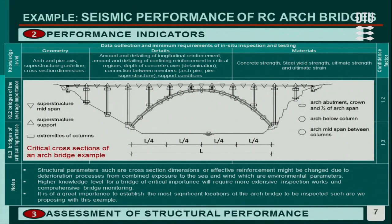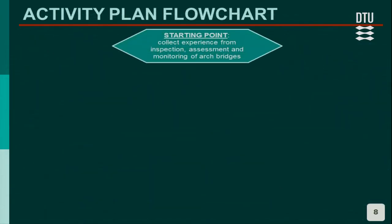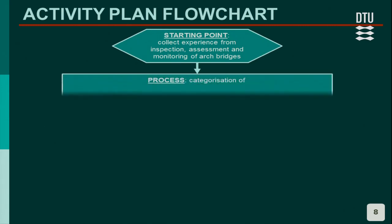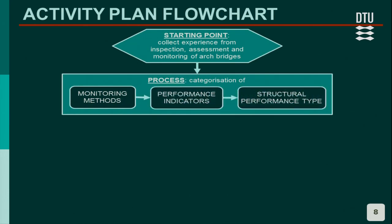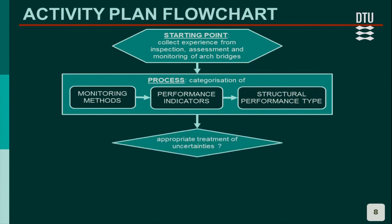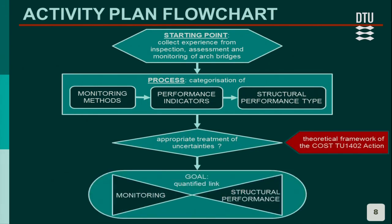This is an example of the most important cross-sections for seismic performance: the abutment, the crown, one-fourth of the arch span, and the extremities of columns are the most important. Instead of conclusions, I will give a flow chart of the activity plan for arch bridges, which can in fact be applied to any kind of structure. After collecting experience from previous inspections, we have to categorize monitoring methods, performance indicators, and structural performance types. Then the uncertainties need to be appropriately treated within the theoretical framework of the COST action, and to reach the final goal: to quantify the link between the monitoring types and structural performances.